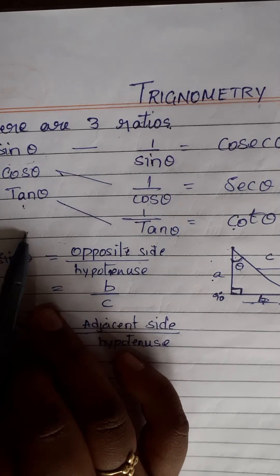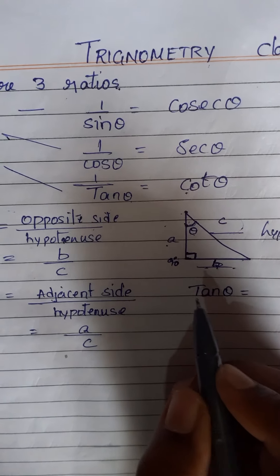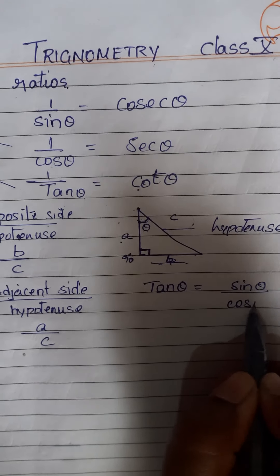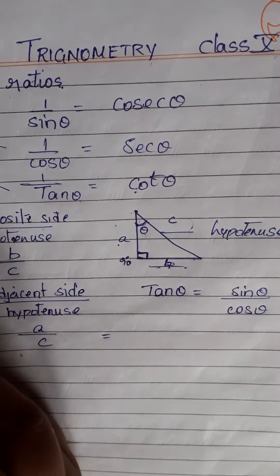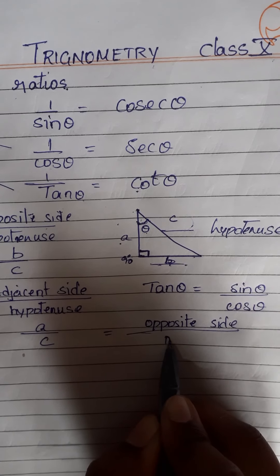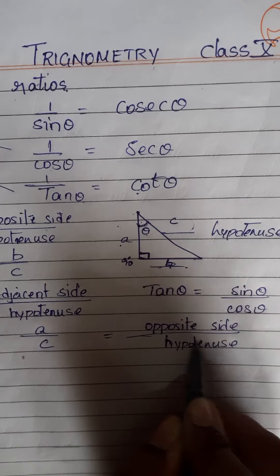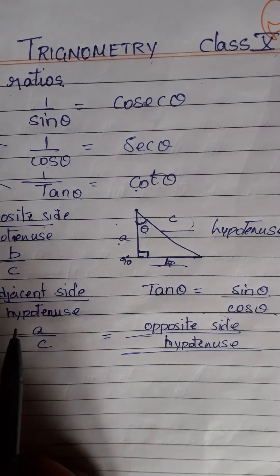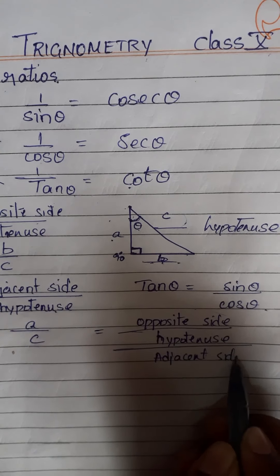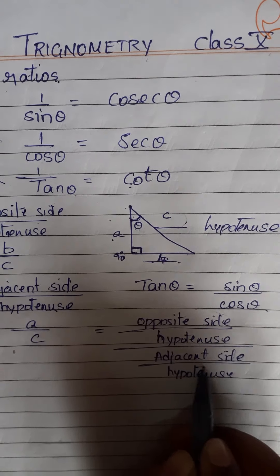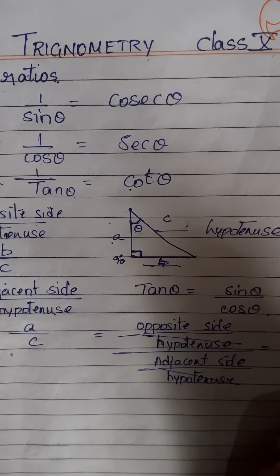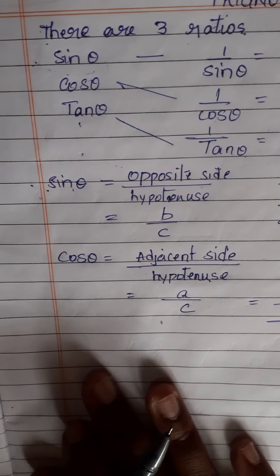The next final ratio is tan theta. Tan theta equals sin theta by cos theta. Sin theta is opposite side by hypotenuse, and cos theta is adjacent side by hypotenuse. Cancelling hypotenuse, it finally becomes opposite side by adjacent side. So, what is the value of tan?